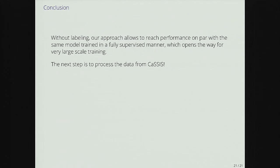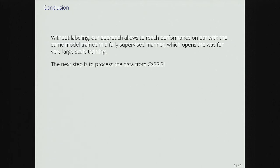The conclusion is that without labeling and using pretty brutal regularization based on very strong physical constraints, we can do without labels, which opens the way to training on extremely large scale because unlabeled stereo data we have plenty of. The next step for us is to wait to process the actual data from CASIS, which will be extremely rewarding. We have an archive paper, currently under review at CVPR. If you're interested in the two other works I presented - micro-action discovery and training a detector using consistency of motions - those were an ICML and a CVPR paper. Thanks for your attention.